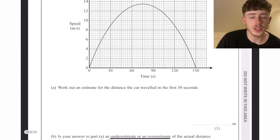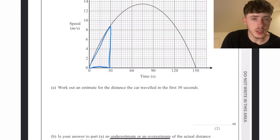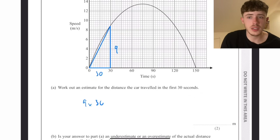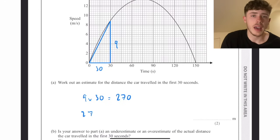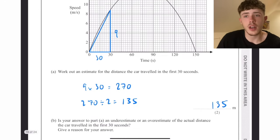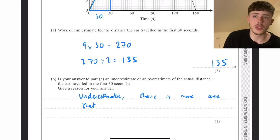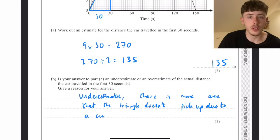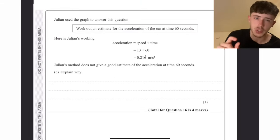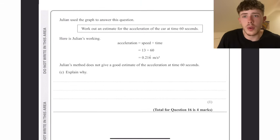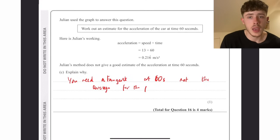Work out an estimate for the distance the car travelled in the first 30 seconds. The distance on a speed time graph is going to be the area under the graph, which is why I've drawn a triangle here. Base times height, divide it by 2, and our distance is going to be 135 metres. Is it an underestimate or an overestimate? It's going to be an underestimate here because our area doesn't quite cover everything under the curve. It's a straight line on the triangle, but a curved graph, so we miss out a small portion. And for this one as well, what they've done is they've worked out the average acceleration across the first 60 seconds, whereas you would need to draw a tangent to get it at 60 seconds.